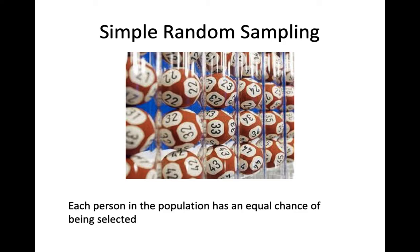The first technique is called simple random sampling. This is when each person in the population has an equal chance of being selected. You could think about giving each person a unique identifier, like a number, and then using a completely random process to select a sample — putting those numbers on lottery balls and running a process similar to a lottery. There are also computerized and software methods. With a simple random sample, every single person in the population has an equal chance of being selected.